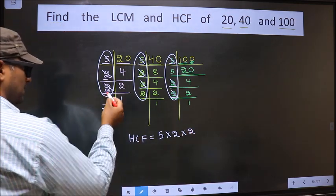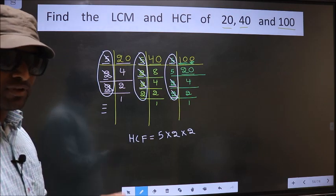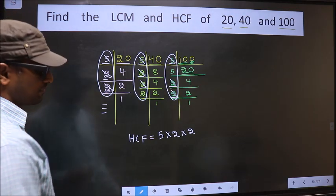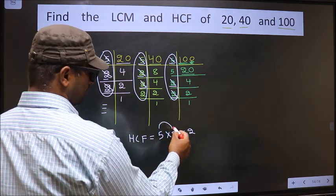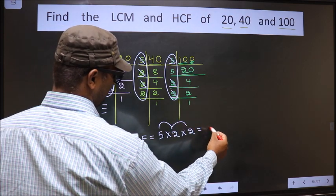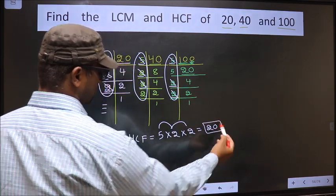No more numbers have been left. Therefore, our HCF is 5 into 2, 10 into 2, 20. 20 is our HCF.